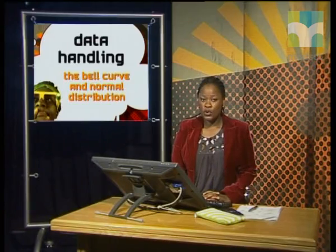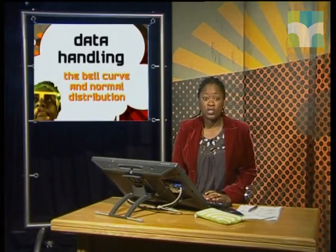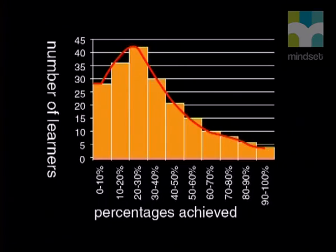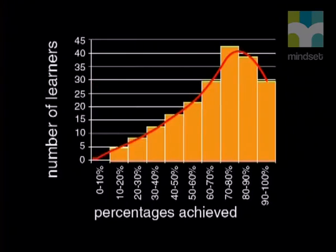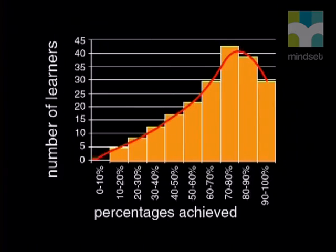The normal distribution is common in many fields. A sample from a large population will look more and more like the normal distribution the larger it is. Our fitted trend line is smooth but does not make a perfect bell shape. If we increase the sizes of the samples, the shape would get closer and closer to the perfect bell shape.